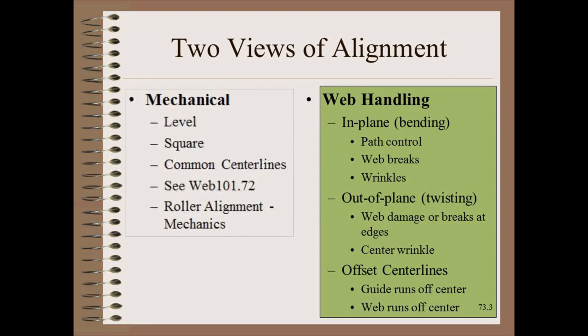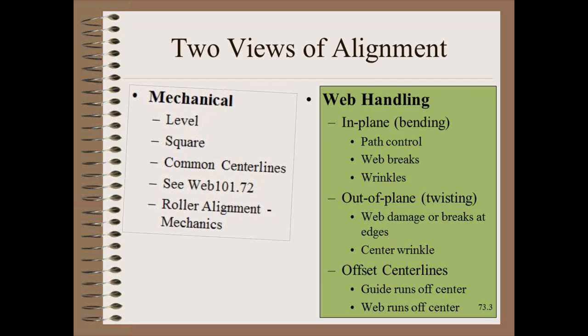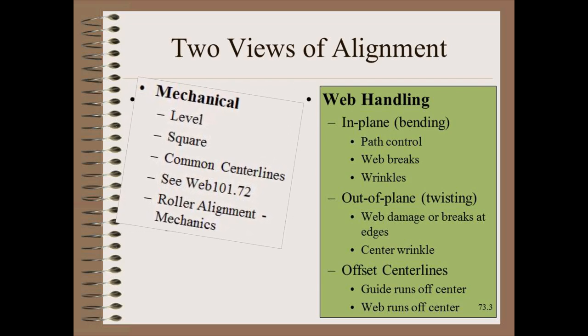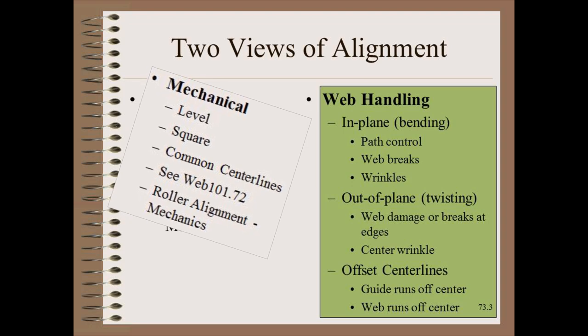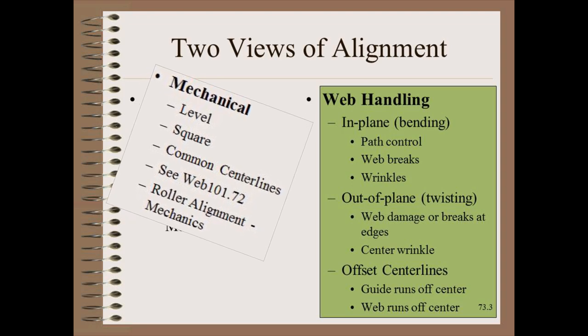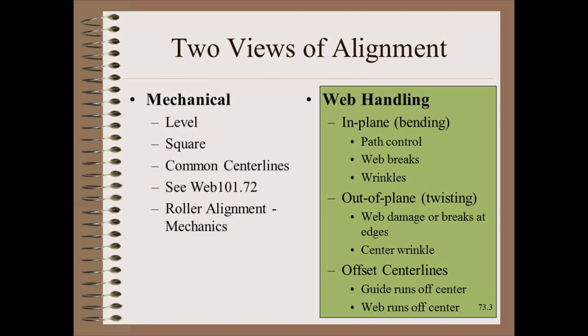Level and square are merely a convenience measurement. In fact, the machine could be out of level by one centimeter, and if every roller were precisely one centimeter out of level, the machine would run fine from a strictly web handling point of view. The web's primary concerns are in-plane bending and out-of-plane twisting. The web's point of view will be the focus of this module.